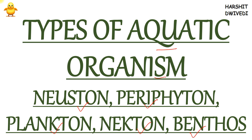Why am I discussing these types of aquatic organisms? Because neuston, periphyton, nekton, and benthos are words you normally don't hear. So when you are attempting an exam and these terms come in front of you, you will get confused. That is why I will give you a basic idea about these words so that you become well acquainted with them and are able to attempt exam questions properly.